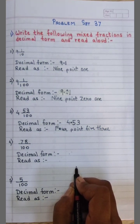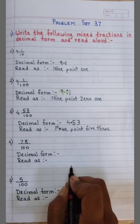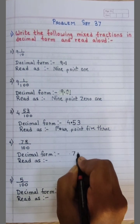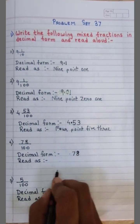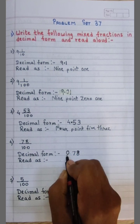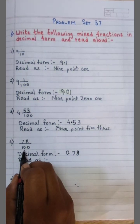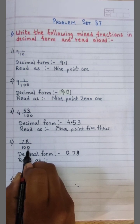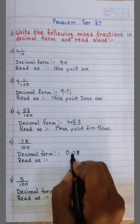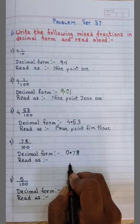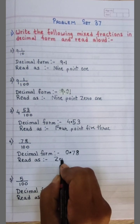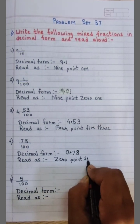I hope you understood how to write the decimal form of a mixed fraction. The next number is 78 upon 100. I write the number 78. There is no whole number, so I place 0. The denominator is 100, meaning 2 zeros, so I place the decimal point before 2 digits — before 7 and 8. I read this decimal form as 0.78.